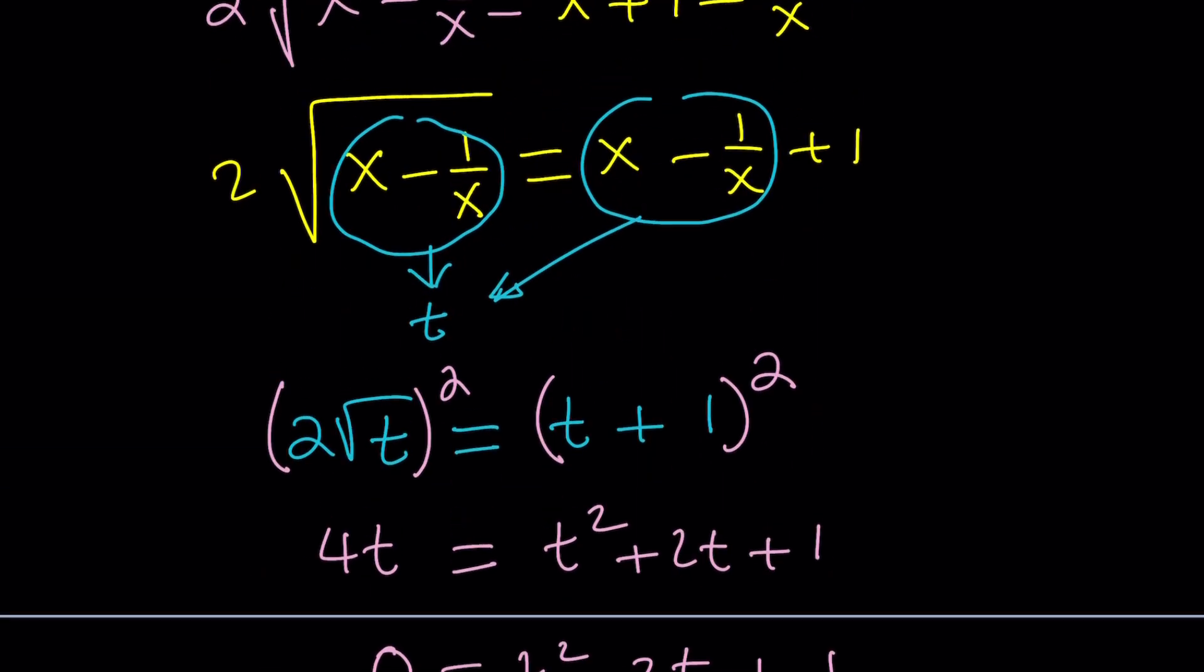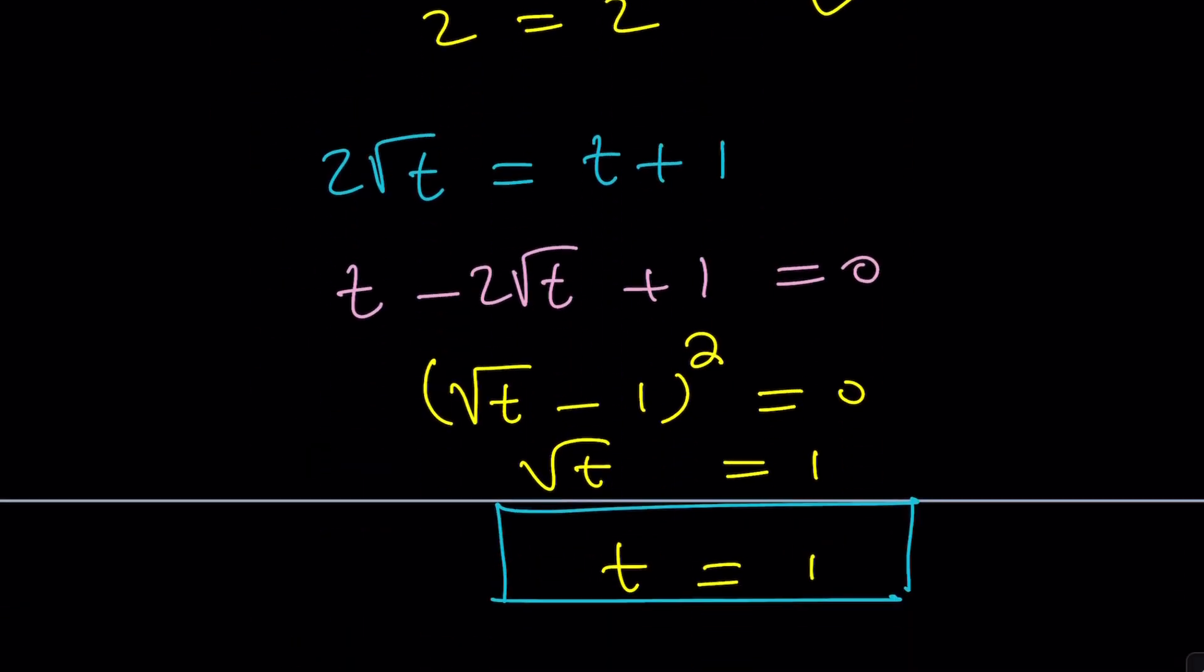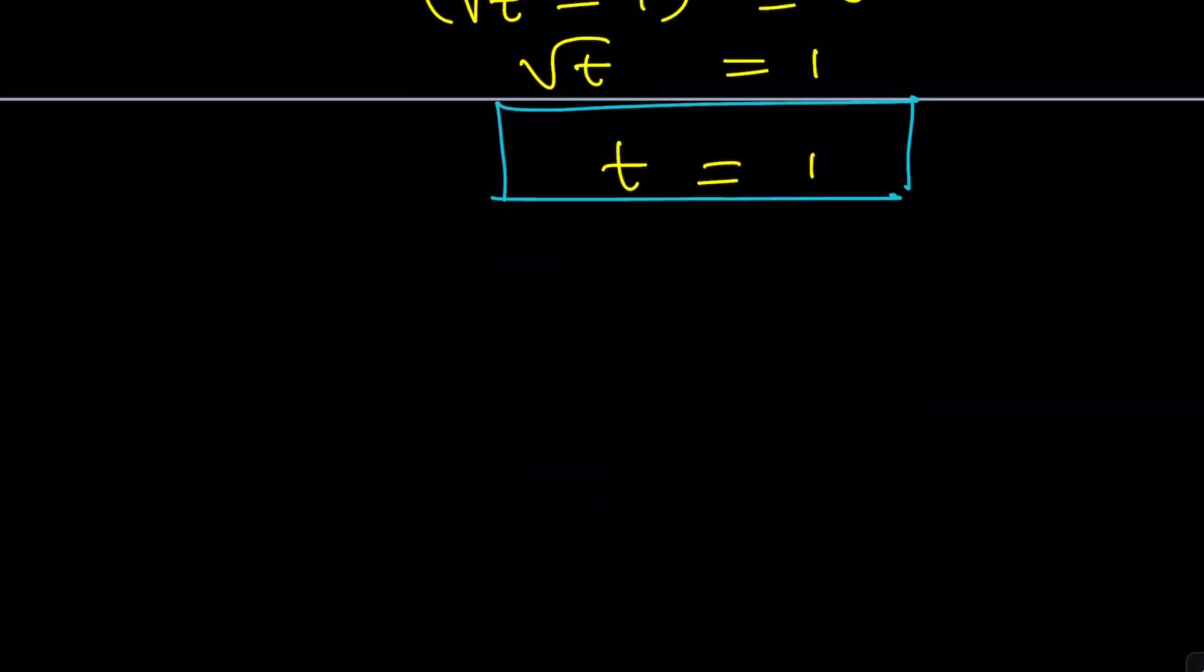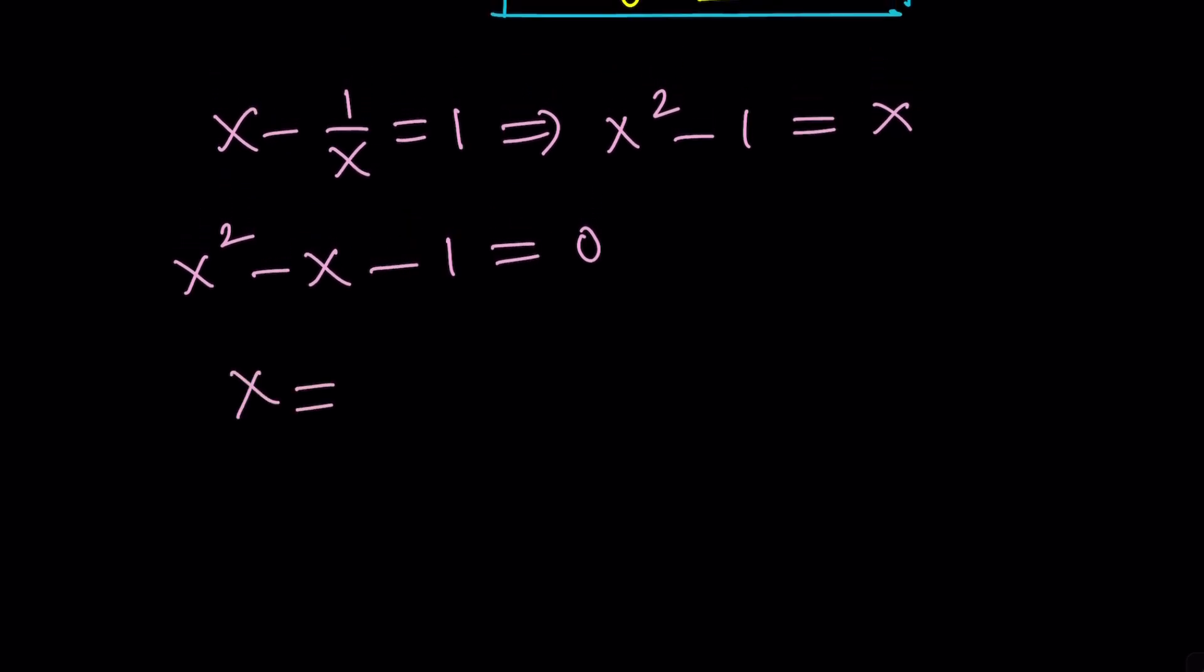So, t equals 1 to keep a long story short and that brings us to this point x minus 1 over x is going to be 1, right? And let's see what we get from here. Let's go ahead and multiply everything by x. x squared minus 1 equals x and then x squared minus x minus 1 equals 0. And then from here x becomes negative b plus minus square root of b squared minus 4ac that becomes root 5 over 2. Does that look familiar to you? x equals 1 plus root 5 over 2 and x equals 1 minus root 5 over 2. And if you said golden ratio you're absolutely right about that.